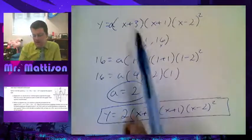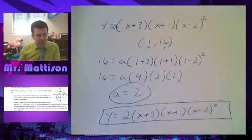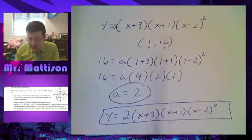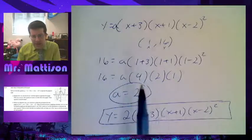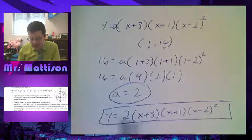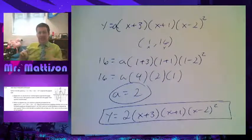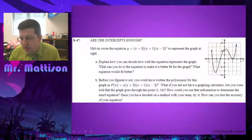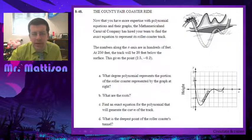So, that's 4 times 2 times 1, which is 8. Divide both sides by 8, and then I get a equals 2. So, once I know that, now I know my actual equation. It would just be y equals 2 times x plus 3, x plus 1, x minus 2 squared. And that's effectively the process that we're looking at today. Write out all the factors which we do know, which we've been doing for a few days now. We should feel fairly confident doing that. And then, I take a point that I know, and I can plug it in, find the stretch factor, and now I have my exact equation for that particular graph.